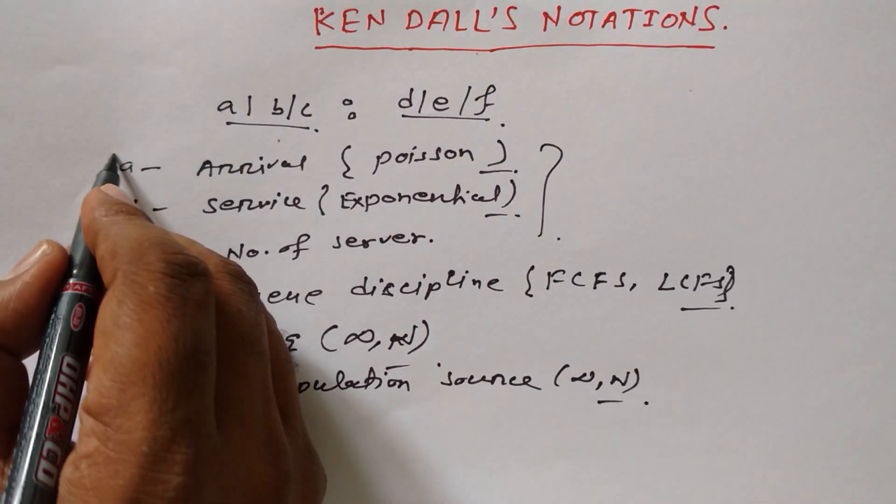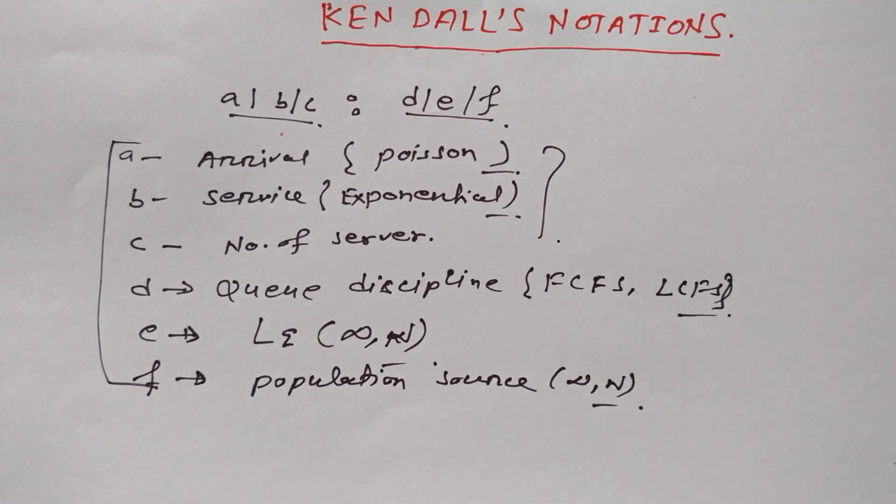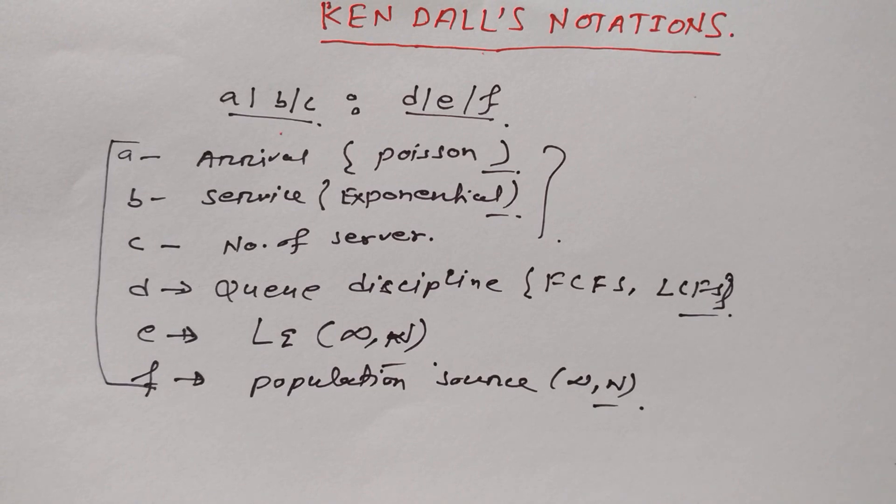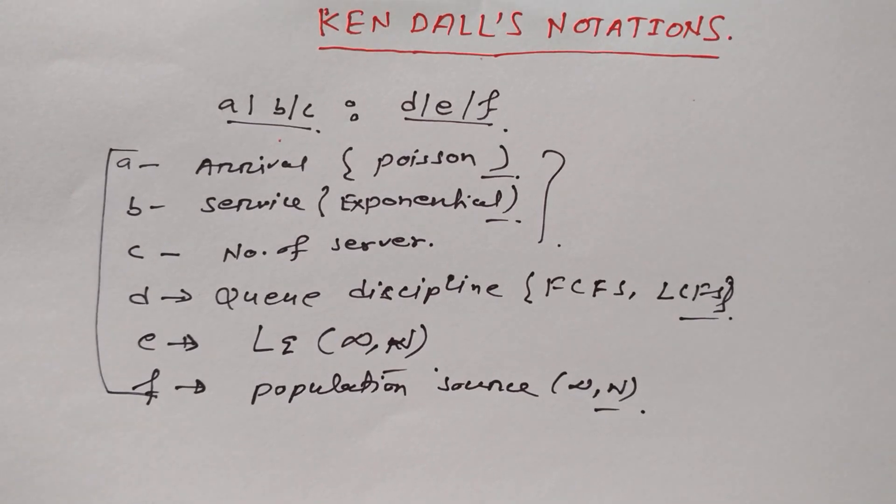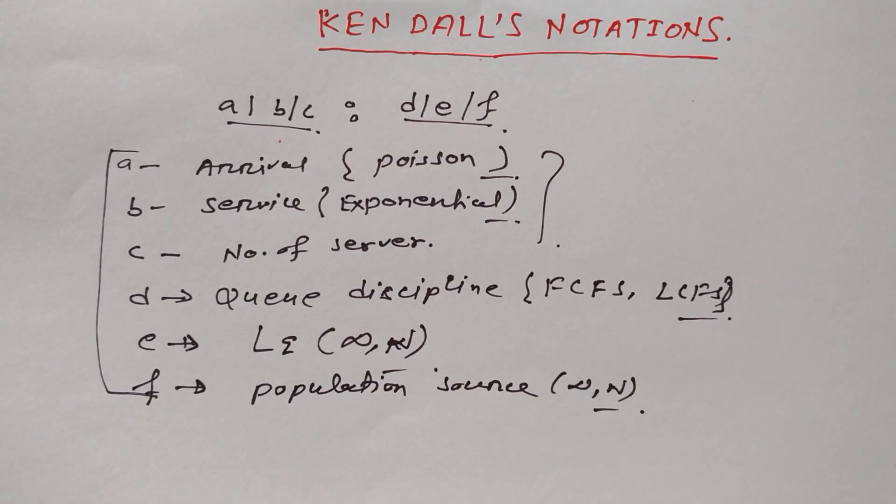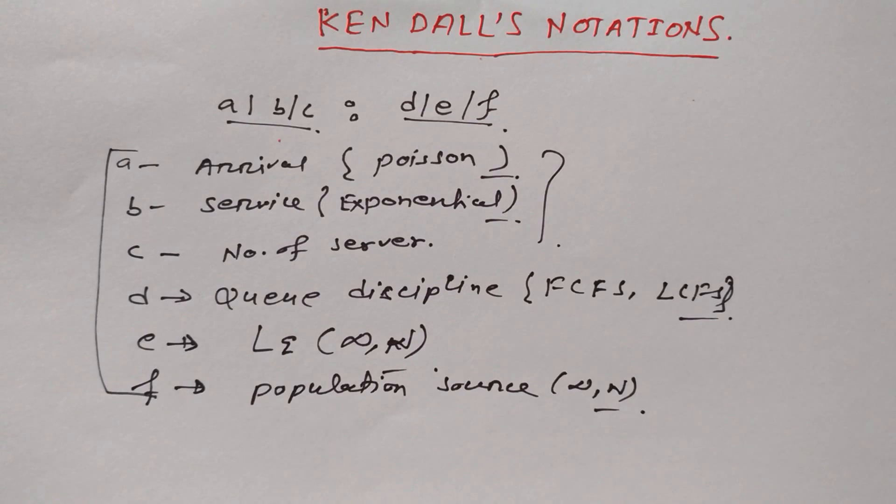So basically if you can remember all these, then you can easily understand. First three is easy. D is discipline, E for queue length, and F for population source. So basically it's easy for you to understand and you can easily mark the right answer if you get a question in the examination. Thanks for watching, see you soon in my next video. Bye bye.